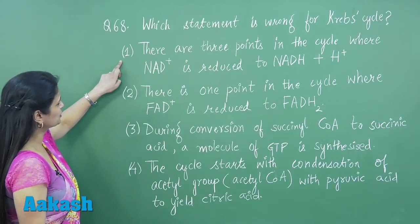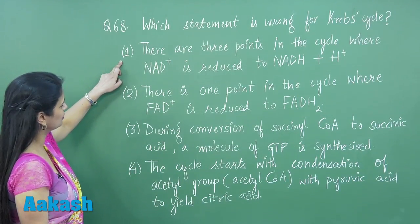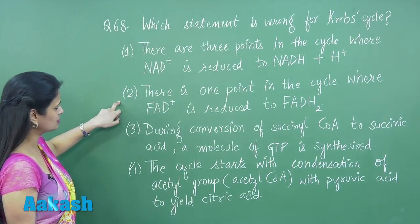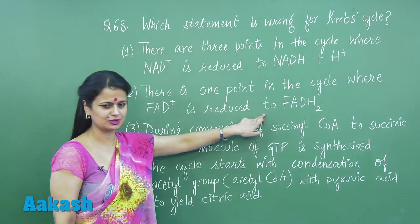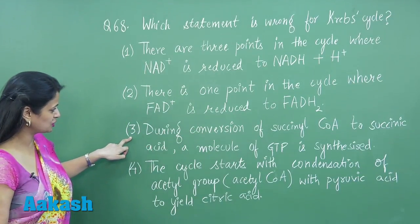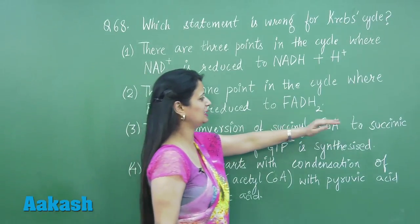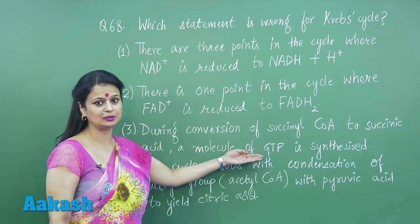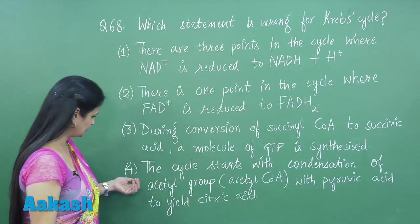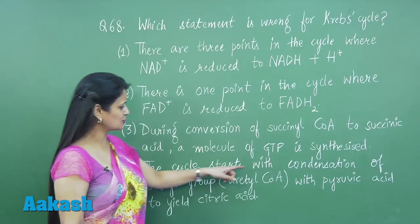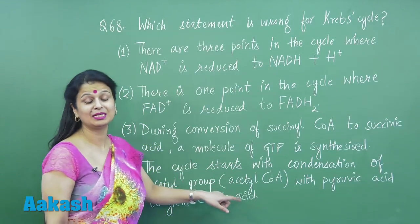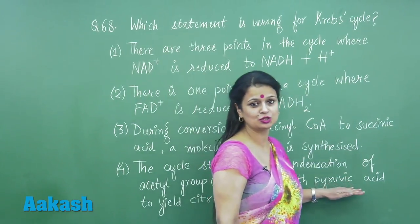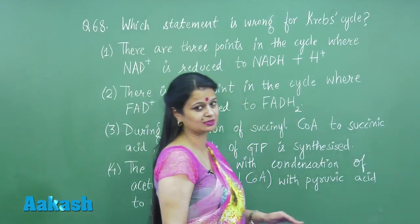Looking at the options: the first option seems correct because at 3 points there is production of NADH. The second option is also right — 1 FADH2 is produced. The third option is correct: when succinyl coenzyme A is converted into succinic acid, there is formation of 1 GTP through substrate level phosphorylation. The last option states the cycle starts with condensation of acetyl coenzyme A with pyruvic acid — this is the wrong one.